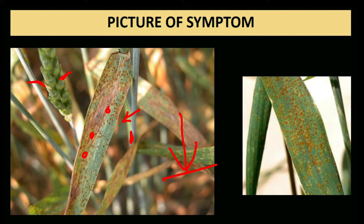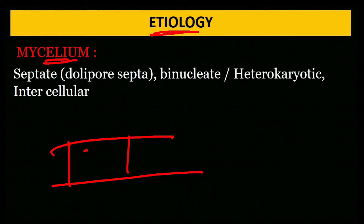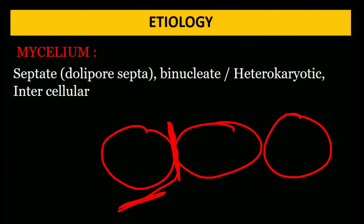Etiology: Mycelium is septate with dolipore septa, binucleate, and intercellular. As the mycelium grows between plant cells — not inside them — it forms a special structure called haustorium through which it takes nutrition.